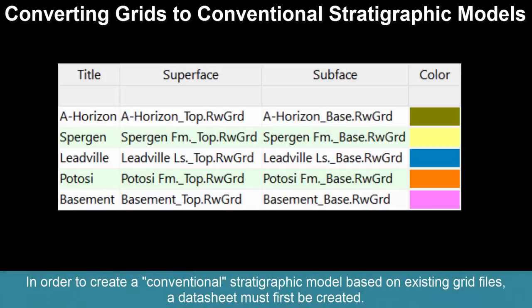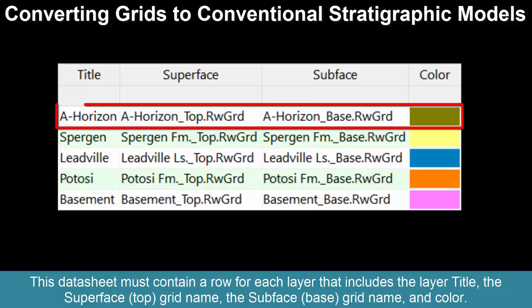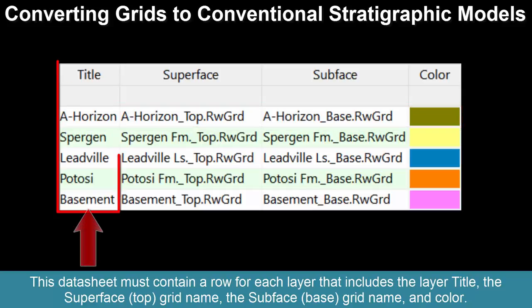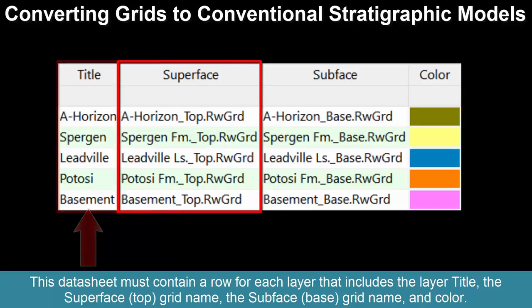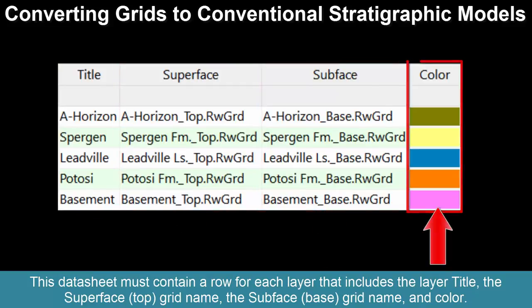In order to create a conventional stratigraphic model based on existing grid files, a datasheet must first be created. This datasheet must contain a row for each layer that includes the layer title, the superface or top grid name, and the subface or base grid name, and color.